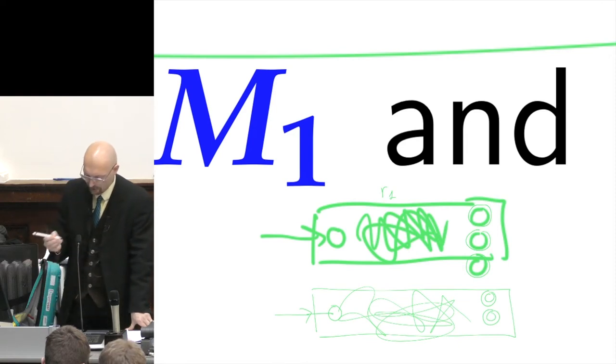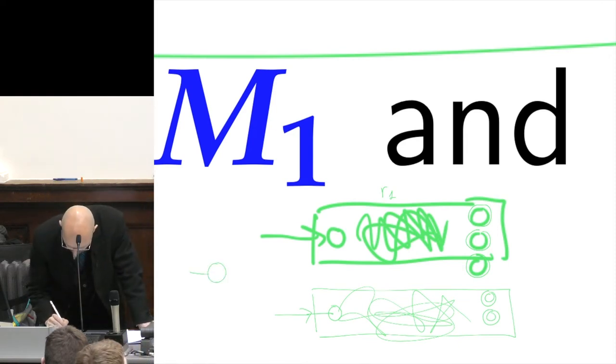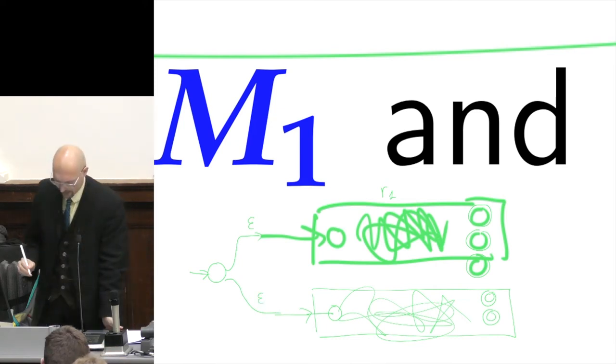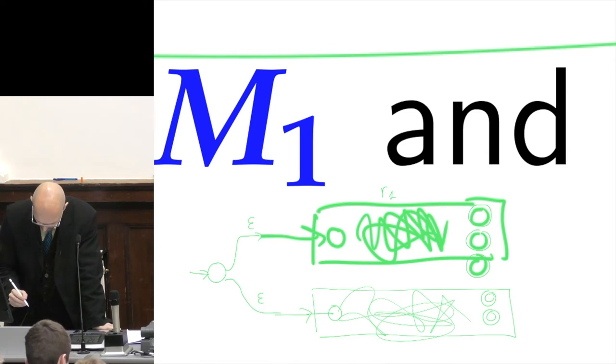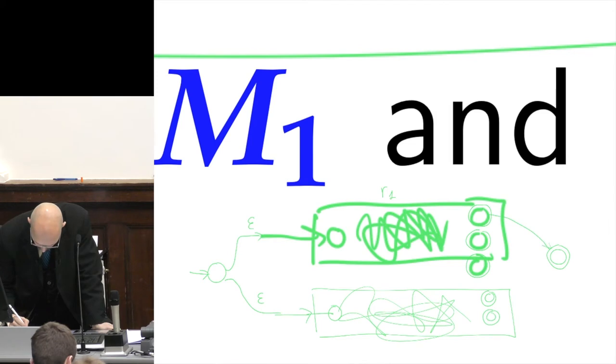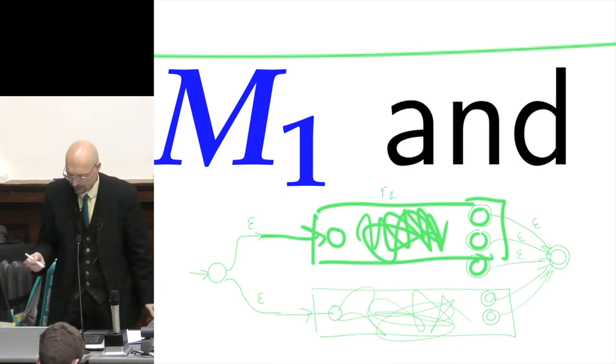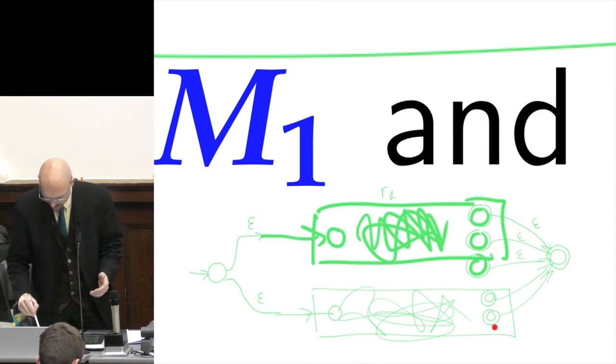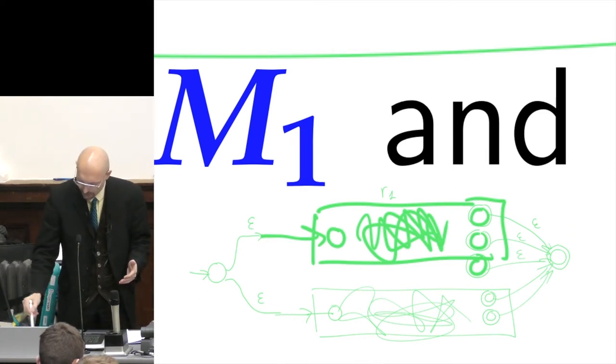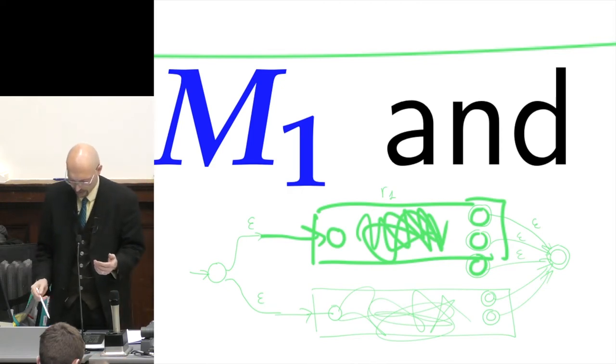And my machine that recognizes this or that is going to be something that starts in some starting state, has some convenient epsilon transitions to the start states of these two machines. And then it could have an accepting state here with epsilon transitions from all these things. Or equivalently, we could declare all these things here as accepting states of my combined machine. So this new machine expresses the alternation or union of R1 and R2.